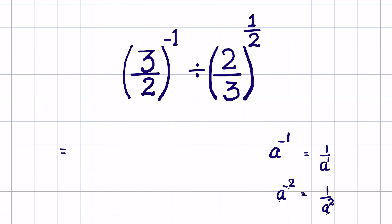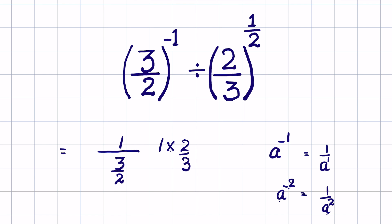So 3 upon 2 raised to the power of minus 1 means 1 upon (3 upon 2), or you can write it as 1 divided by 3 upon 2. Converting division into multiplication, it becomes 1 multiplied by 2 upon 3, because when you convert division into multiplication, the number after that gets inverted.